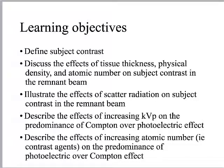As it relates to subject contrast and the remnant beam, we'll define the remnant beam real carefully. We'll illustrate the effects of scatter radiation on subject contrast. Let's take a guess — scatter is not going to be a good thing for contrast. Scatter makes contrast bad; it sets down a blanket of fog on the image, or noise. We'll talk about the effects of increasing KVP on the predominance of Compton over photoelectric effect — that's where stuff gets weird. And finally, we'll describe the effects of increasing atomic number on contrast, like contrast agents, on photoelectric and Compton effect.